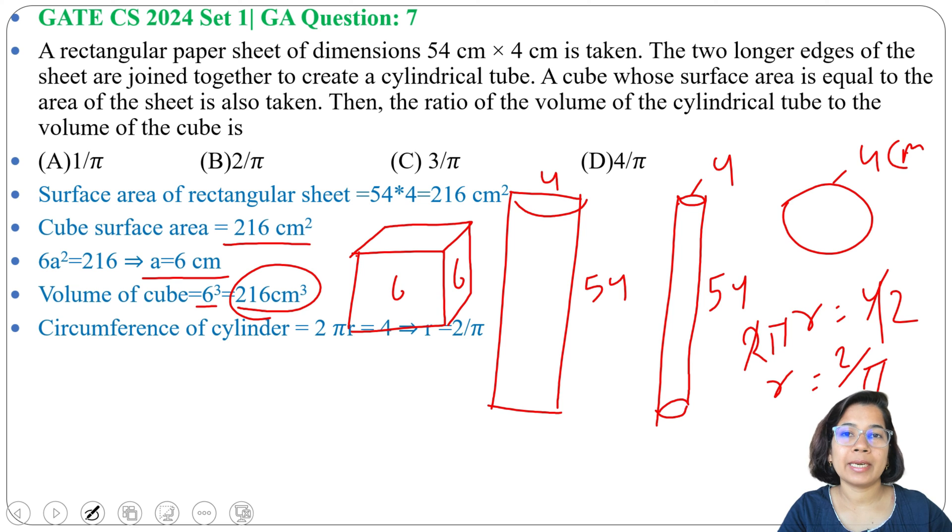Now with the help of this radius we can find the volume of the cylindrical tube. So volume of tube formula is πr²h. h is 54 cm, R value is 2 divided by π. So volume of the cylinder will be π multiplication.